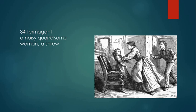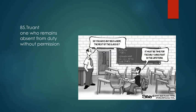Termagant is a noisy, quarrelsome woman — a woman who is cruel, noisy, and difficult. She is called a termagant. Truant is one who remains absent from duty without permission. If you take leave without getting permission from your boss, or are absent from school without informing your teacher or principal, it is called being a truant.